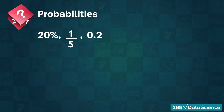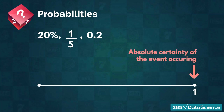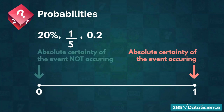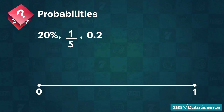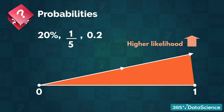Now let us briefly talk about interpreting these probability values. Having a probability of 1 expresses absolute certainty of the event occurring, and a probability of 0 expresses absolute certainty of the event not occurring. Higher probability values indicate a higher likelihood. Most events we are interested in would have a probability other than 0 and 1, so values like 0.2, 0.5, and 0.66 are what we generally expect to see.